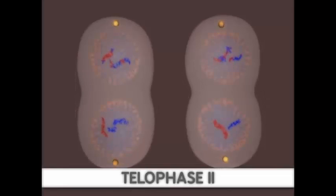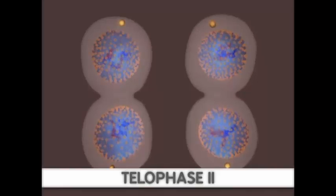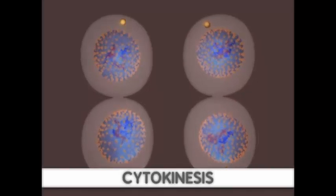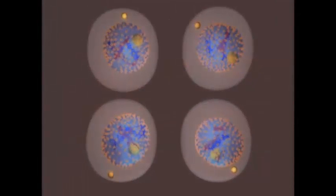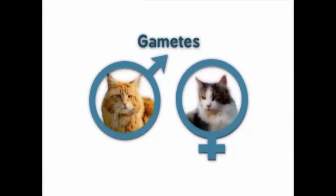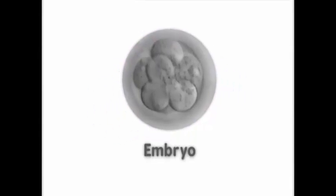The final steps of meiosis I are telophase I and cytokinesis. Here, the cell divides into two daughter cells. Each of these two cells now undergo meiosis II. Meiosis II is similar to mitosis. The first stage of meiosis II is prophase II. Again, chromosomes condense, the nuclear envelope breaks down, and the spindle apparatus forms.